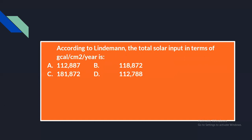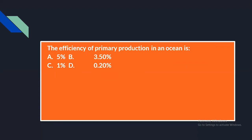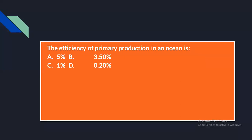According to Lindeman, the total solar input in terms of kcal per cm² per year is 118,872. The efficiency of primary production in an ocean is 0.20%. This is the last question of this lecture.